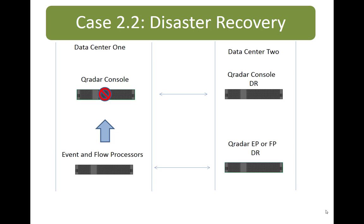In a similar scenario, if I lose my QRadar console at data center one, I can tell that event or flow processor to start talking to my QRadar console at the DR site. This does require some scripting, so it's not trivial to set up, but it's not terrible either. This is a more reasonable use of performance and we see it more often because this isn't live high-speed feeds and data — it's just summary and event data going up to that console so we can manage it from there without doing a full failover of the data center.